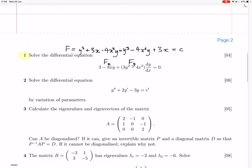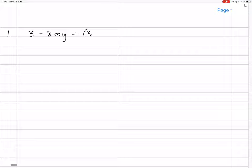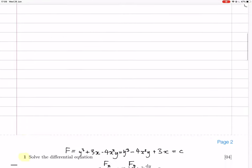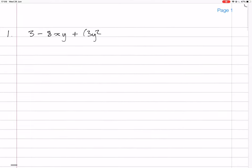So question 1, the differential equation to solve was 3 minus 8xy plus 3y squared minus 4x squared dy dx equals 0, so that's the same as fx plus fy dy dx equals 0.